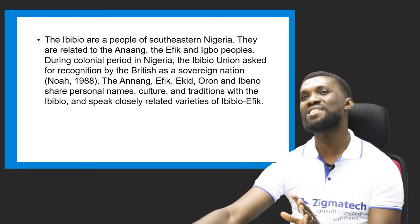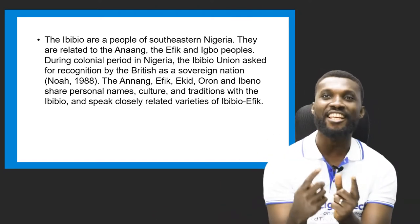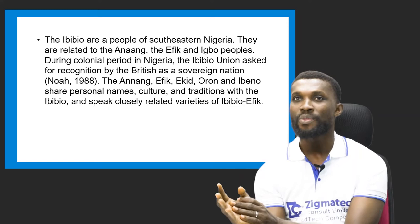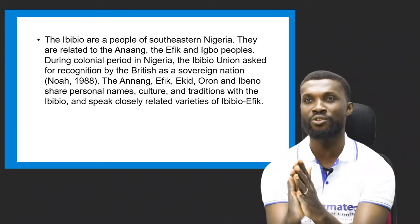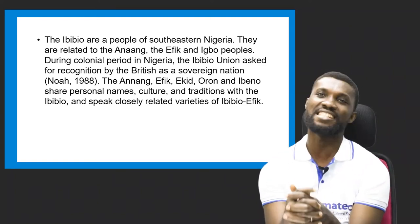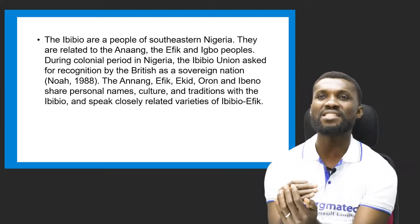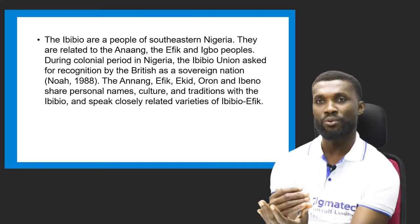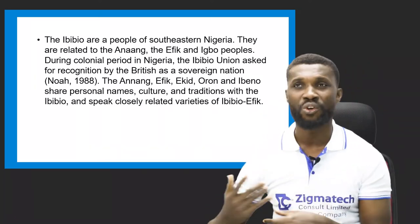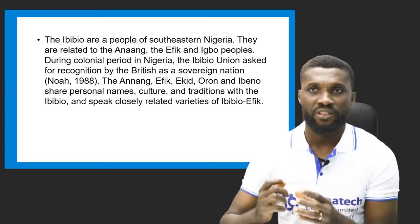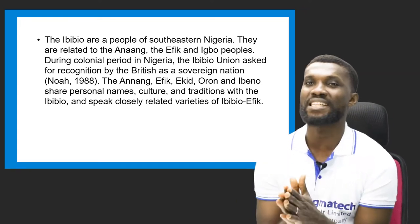The Ibibio lived by themselves, governed themselves, until the arrival of the British. When the British came, they merged the Ibibio people with eastern groups, who now lived as one colony under British colonial rule. The Ibibio are a people of southern and south-eastern Nigeria, related to the Anang, Efik, and Igbo people. During the colonial period, the Ibibio Union asked for recognition by the British as a sovereign nation in 1938.